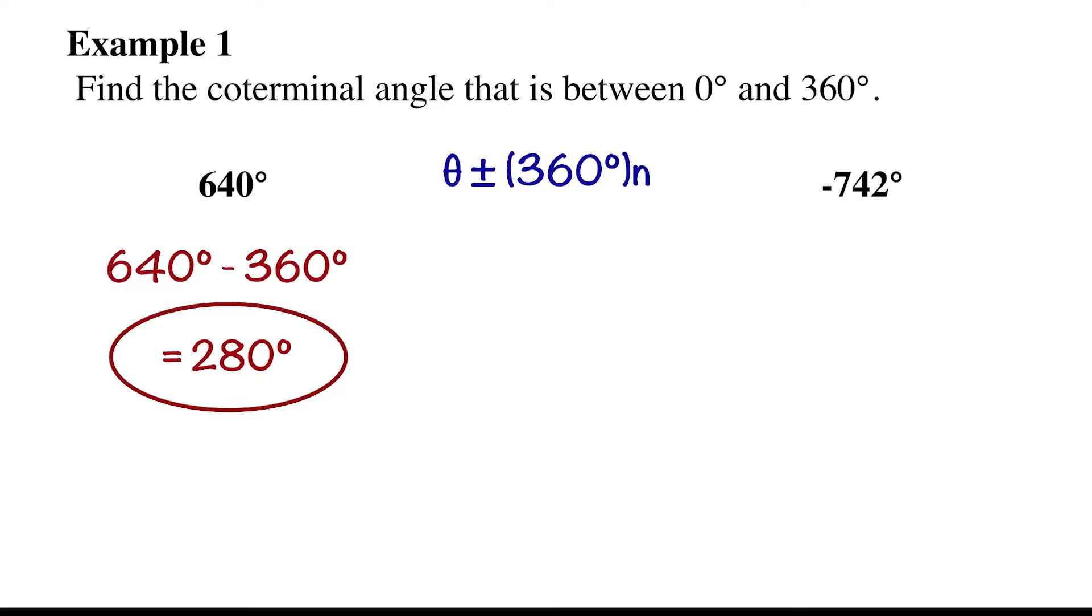If theta is negative, we just add 360. Here, we have to add 2 times 360, so n equals 2. We get 22 degrees.